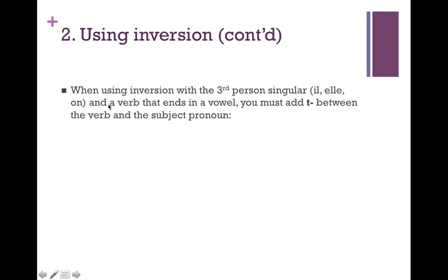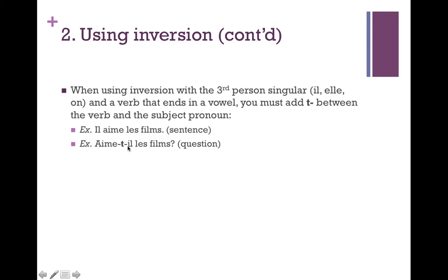There's one side note for inversion. If you're using inversion with the third-person singular — so il (he), elle (she), or on (the gender-neutral third-person singular pronoun) — and the verb ends in a vowel, you must add a -t- between the verb and the subject pronoun. For example, 'aime-t-il les films?' You get that from the sentence 'il aime les films.' When using inversion we switch the subject il and the verb aime. Because the subject starts with a vowel and the verb ends with a vowel, we add the -t- in between so we have that liaison and the pronunciation is clear. 'Aime-t-il les films?' sounds a lot better than running the vowels together.